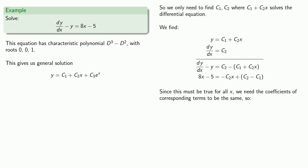Since this must be true for all x, we need the coefficients of corresponding terms to be the same, and so we need minus c_2, the coefficient of x, to be equal to 8, the coefficient of x. Likewise, we need c_2 minus c_1, the constant term on the right, to be equal to minus 5, the constant term on the left. And solving this system gives us c_2 equal to minus 8 and c_1 equal to minus 3. And so c_1 and c_2 are no longer undetermined coefficients. We've determined what they are, and so now we have our general solution to the original differential equation: y equals minus 3 minus 8x plus c_3e^x.